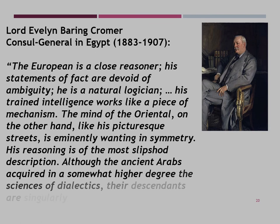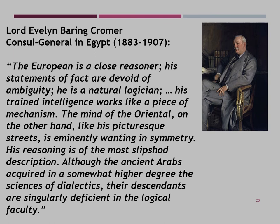Lord Cromer, as consul in Egypt, said: 'The European is a close reasoner. His statements of fact are devoid of ambiguity. He is a natural logician. His trained intelligence works like a piece of mechanism. The mind of the Oriental, on the other hand, like his picturesque streets, is eminently wanting in symmetry. His reasoning is of the most slipshod description. Although the ancient Arabs acquired in a somewhat higher degree the science of dialectics, their descendants are singularly deficient in the logical faculty.' This is very representative of the sort of text that Said encountered in his analysis in Orientalism.